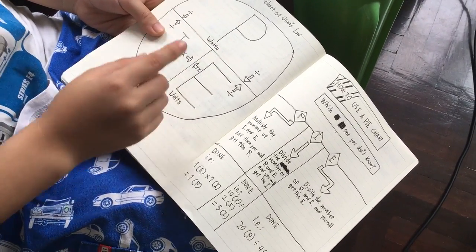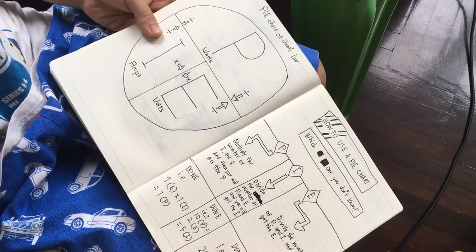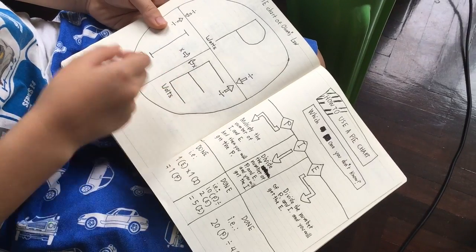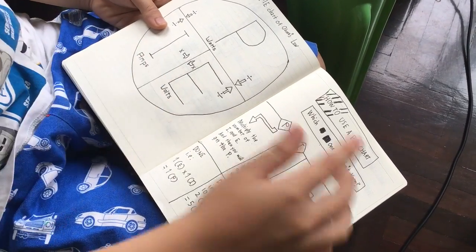Watts, amps, volts. P, I, E. Just pi. That's how you remember it. Okay. Pi. And remember that P, I comes first. I becomes before E. That's the most important part of it.